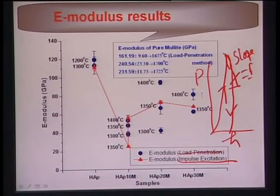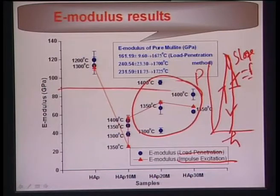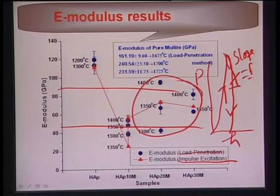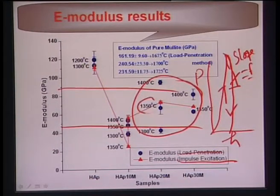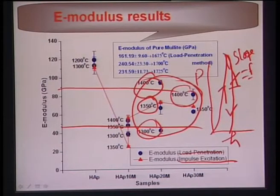Independent of measurement technique, the elastic modulus of hydroxyapatite-mullite materials ranges roughly 45–85 GPa, which closely correlates with the elastic modulus of cortical bone. Depending on the sintering temperature, one can identify the elastic modulus values required for real applications.